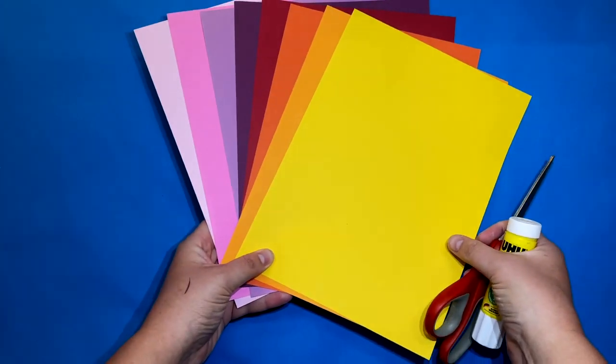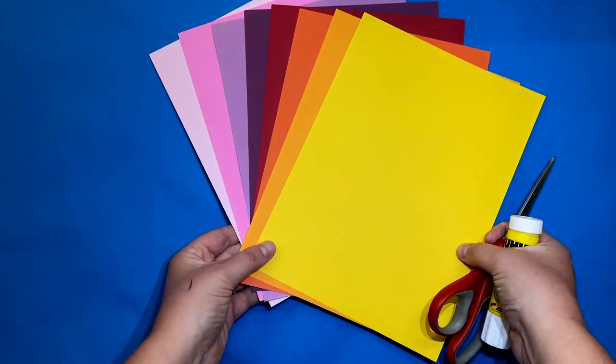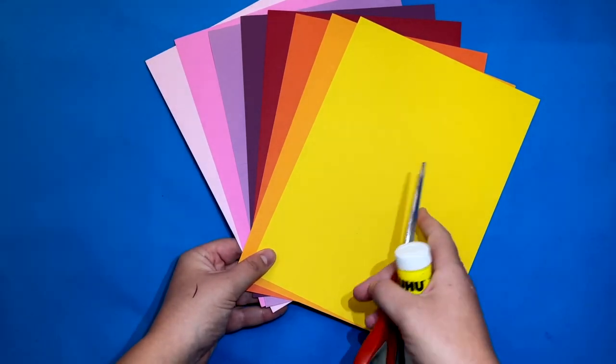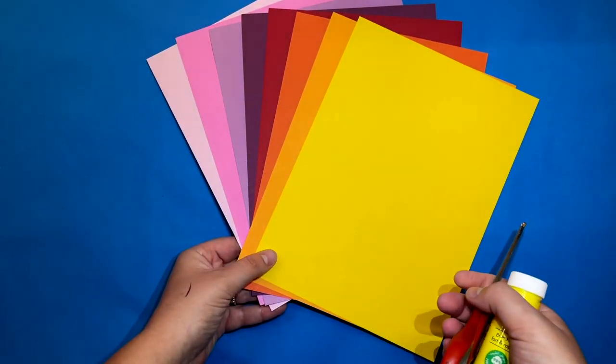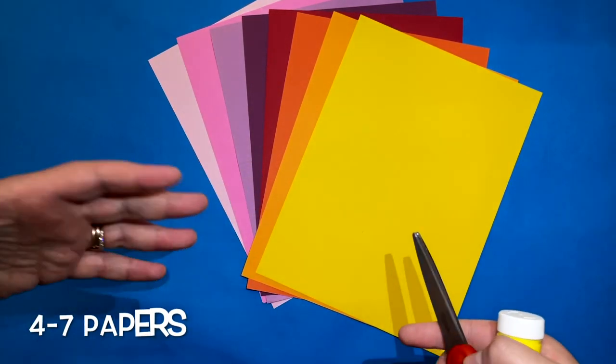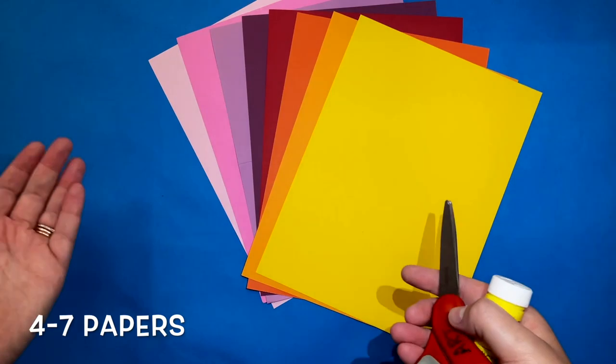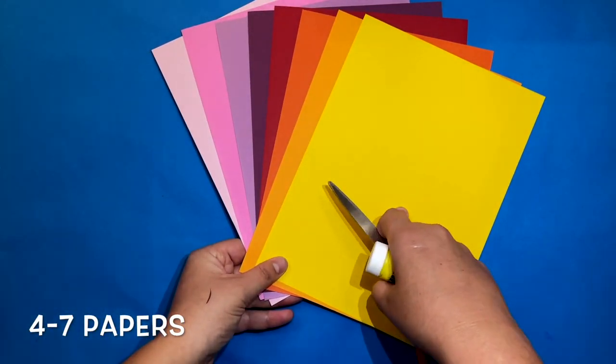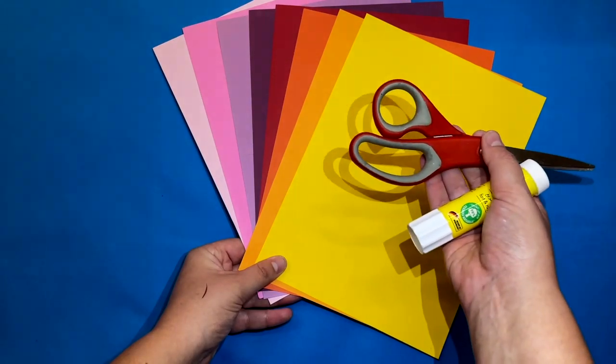Today we're going to be using colorful construction paper. You may choose your colors in ROYGBIV order, or if you'd like to choose colors in a variety of other arrangements you may. Today we're going to be using four to seven or eight papers. That's okay with me, as many as you have time for. You'll also need scissors and stick glue.